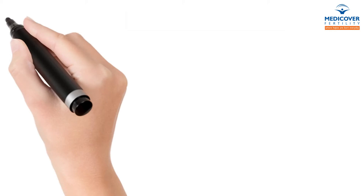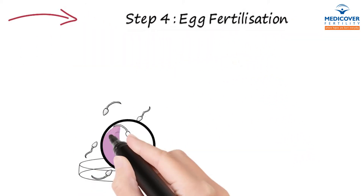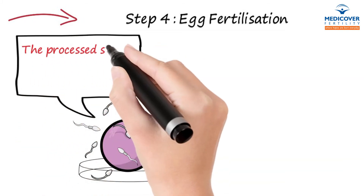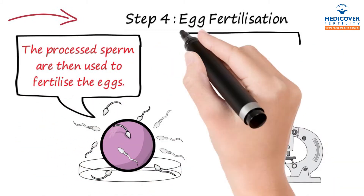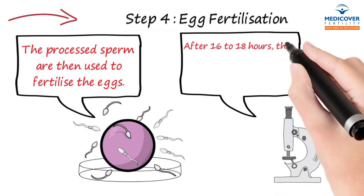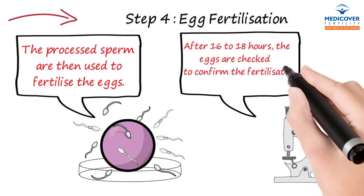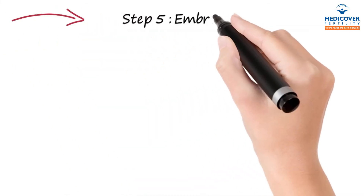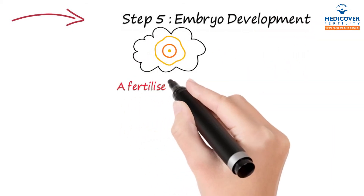Step 4: Egg fertilization. The processed sperm are then used to fertilize the eggs. After 16 to 18 hours, the eggs are checked to confirm that fertilization has been successful.